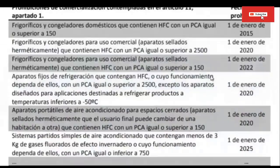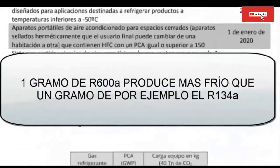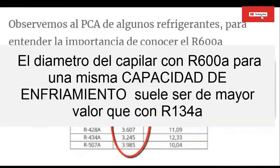Difference 5: One gram of RSI X-100A can receive more heat than other refrigerants, so the amount of RSI X-100A present in a system is low. Difference 6: The diameter of the capillary used in refrigerators with RSI X-100A is larger and may have a shorter length than that used with RON 134A.